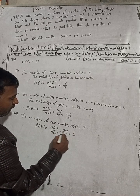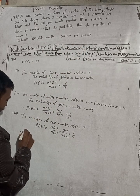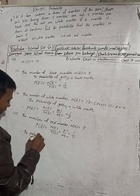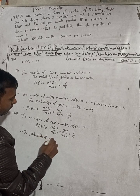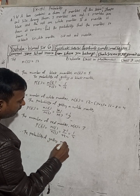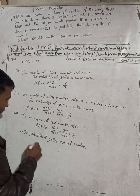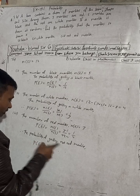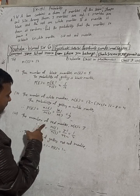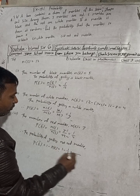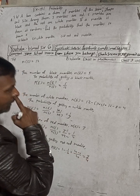Now we have to find the probability of not red marbles. Not red marble means it is the complement of getting a red marble, so P(not red) = 1 - P(E) = 1 - 1/4 = 3/4. So the answer is 3 by 4.